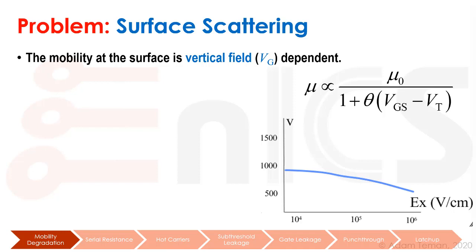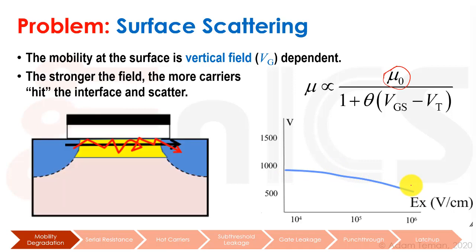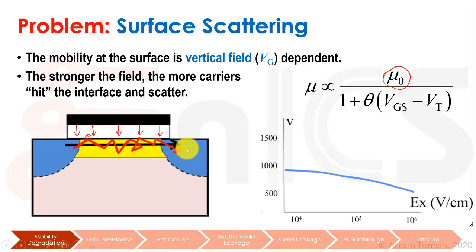When we look at the mobility, we see that it's actually dependent on the vertical field, the gate voltage Vg. Mobility is proportional to some basic mobility mu-zero, divided by one plus some theta times (Vgs minus Vt). So as we increase the vertical field, our mobility goes down. The stronger the field, the more carriers hit the interface and scatter. The field pulling down from the gate pulls electrons trying to run ballistically across the channel, so sometimes they hit the interface between the silicon and the silicon dioxide, causing them to scatter and take a longer path, reducing our effective mobility.